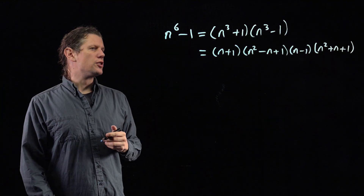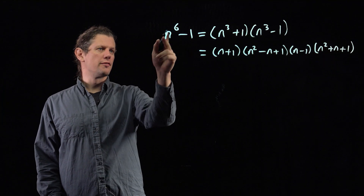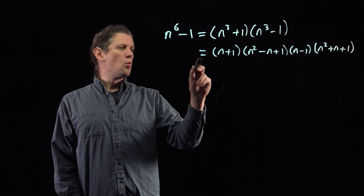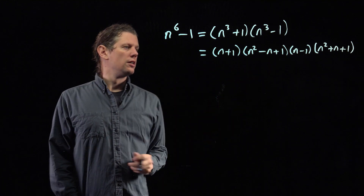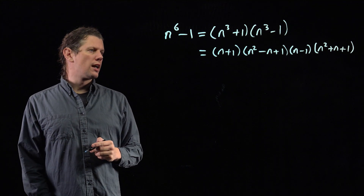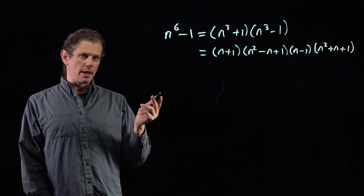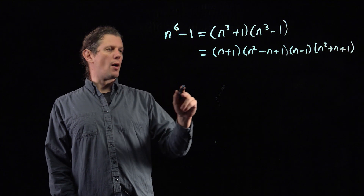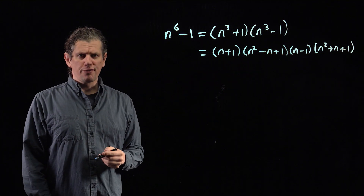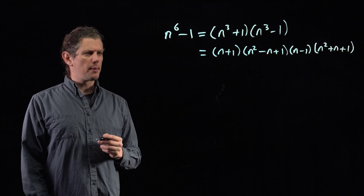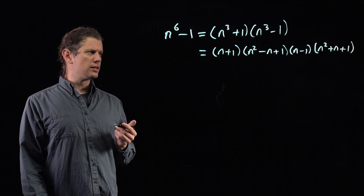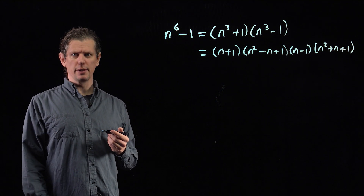So that's the factorisation. If we've got a prime that's a factor of n⁶ - 1, then it's going to be a factor of one of these four different factors. We're going to classify primes dividing n⁶ - 1 by which of the four terms they divide. But first, it's pleasant to deal with a couple of small cases so I don't have to interrupt later.